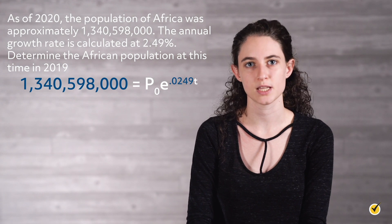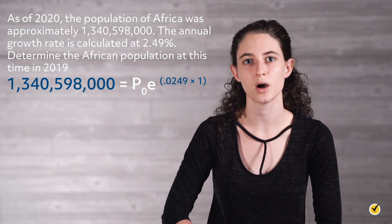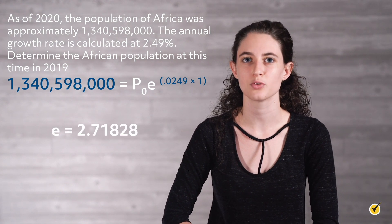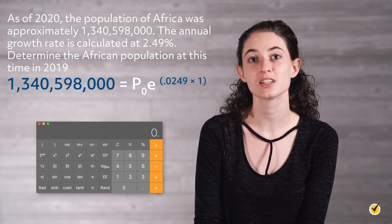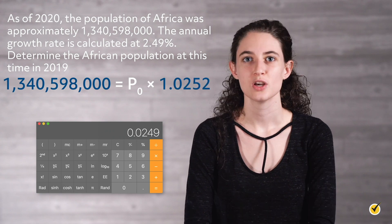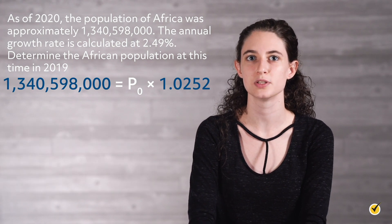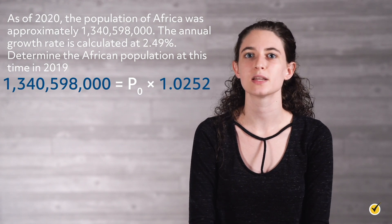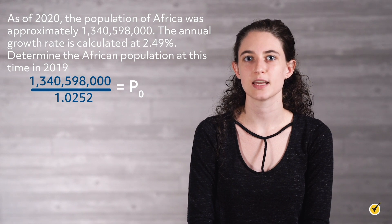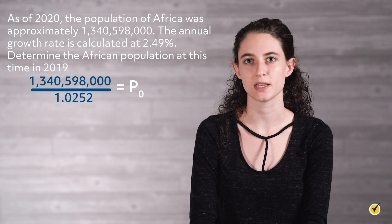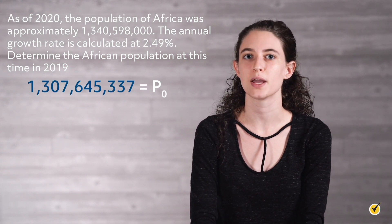The rate of growth is 2.49%, which converts to a decimal value of 0.0249. The number of years from 2019 to 2020 is 1. An approximate value of e equals 2.71828 can be used. We are asked to determine the initial population p0. First, use a calculator to determine the constant value that is multiplied by p0: e to the 0.0249. We know that 1,340,598,000 equals p0 times 1.0252. Solve for p0 by dividing both sides by 1.0252. Our calculation shows the value to be about 1.308 billion people, which represents the African population in 2019.